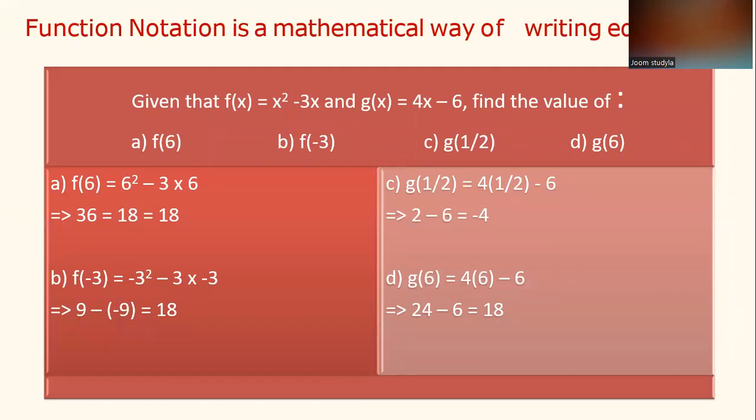Function notation is a mathematical way of writing equations. For example, given that f(X) equals X to the power of 2 minus 3X, and g(X) equals 4X minus 6, find the value of question A. f(6) means that X takes up the value of 6, so f(6) equals 6 to the power of 2 minus 3 multiplied by 6, which equals 36 minus 18, which is 18.